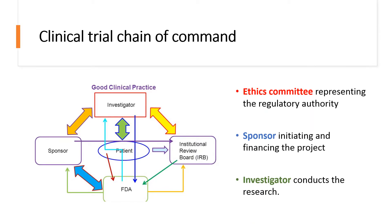According to the ICH-GCP guidelines, there are three key roles in the clinical trial process: the ethics committee representing the regulatory authority, the sponsor initiating and financing the project, and the investigator who conducts the research.